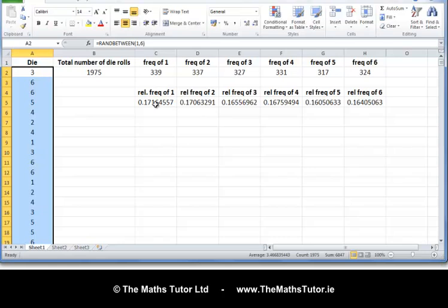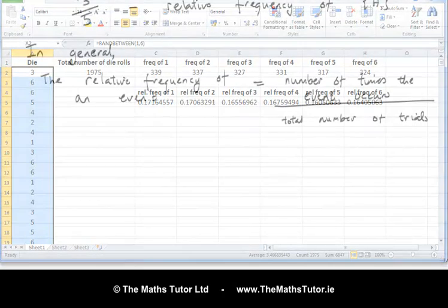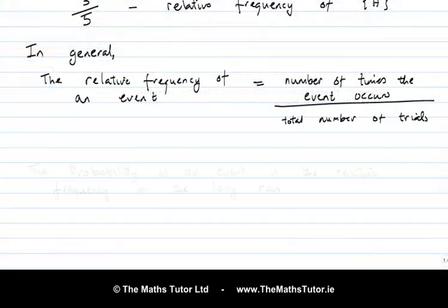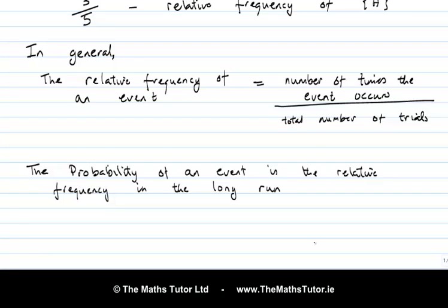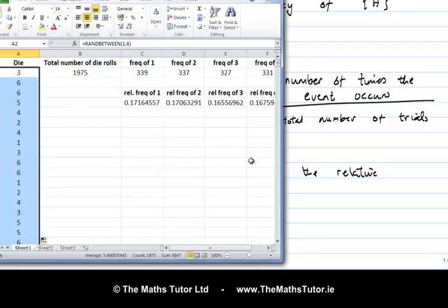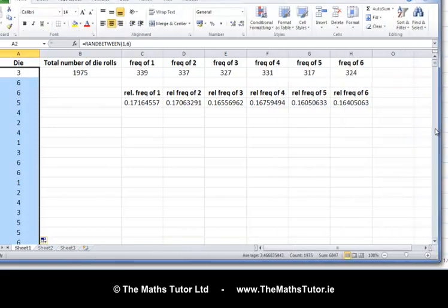So this leads to the idea of probability. The probability of an event is the relative frequency in the long run. So the probability of an event is the relative frequency of the event in the long run. In other words, as we take more and more trials, we expect the relative frequency to settle down to some particular number. And that number is the probability of the event. So if I go back to the spreadsheet here, we can see that over 1,975 trials, the relative frequencies seem to be settling down to something around 0.16 or 0.17. And if you think about that, we'd expect the relative frequencies of these things to be one sixth, which is 0.166 repeating. So that's what's happening here. That's what we expect to happen. And we can see that it is happening in fact.